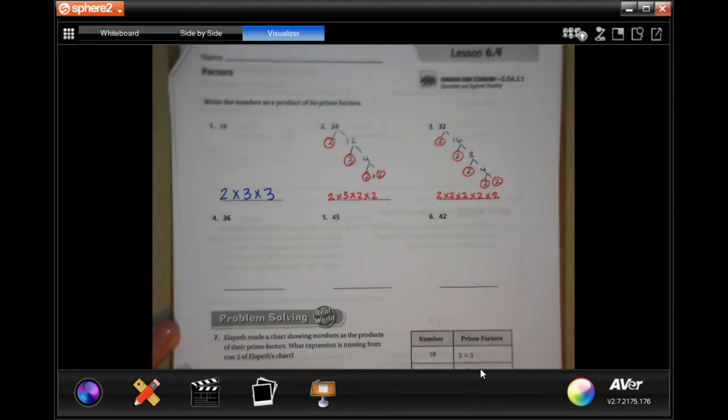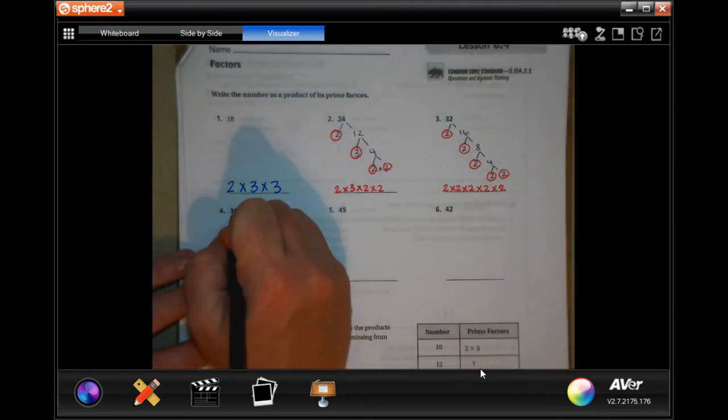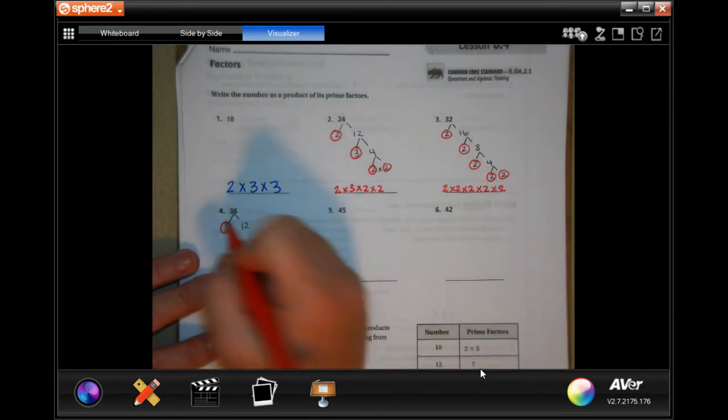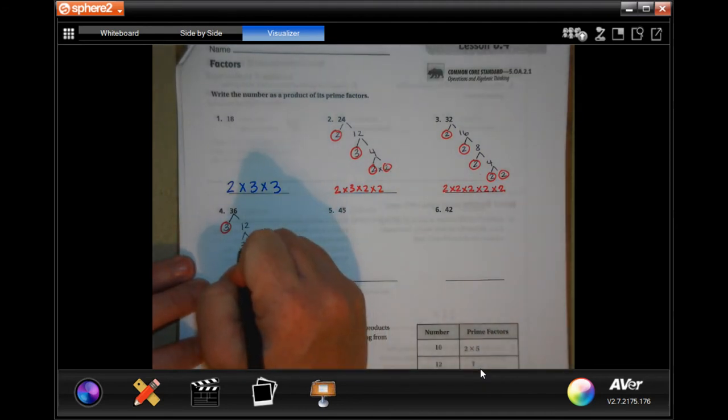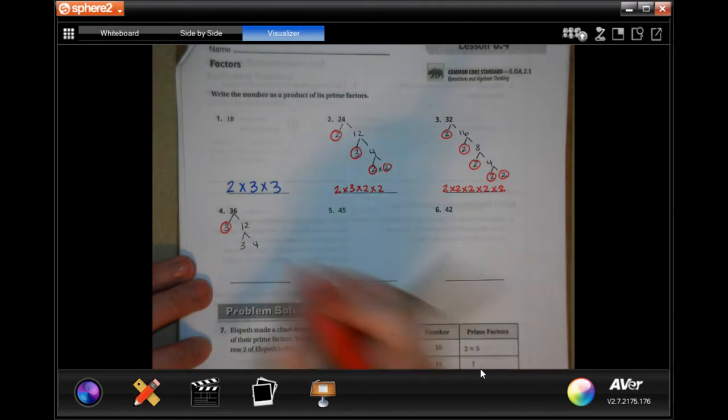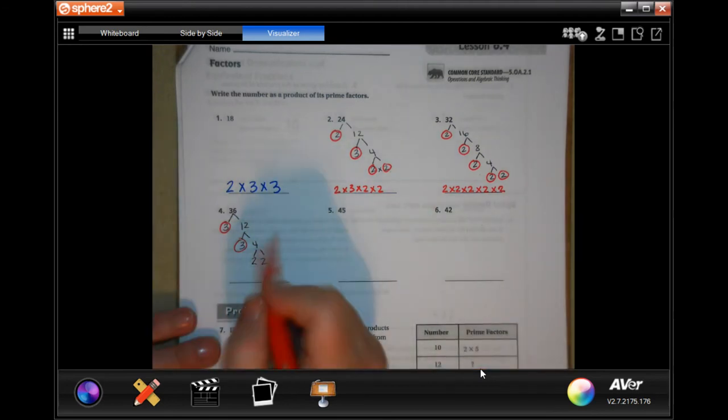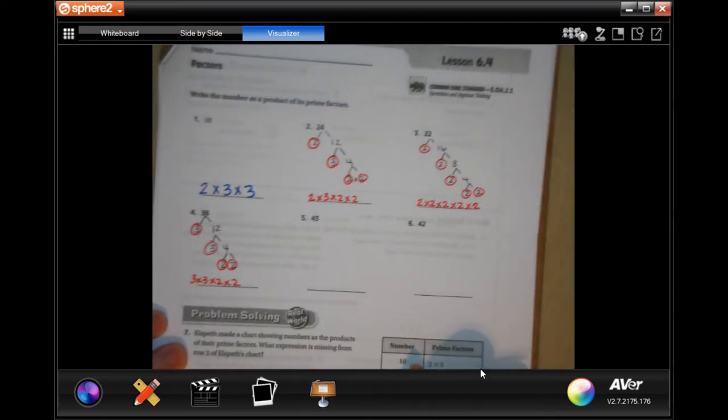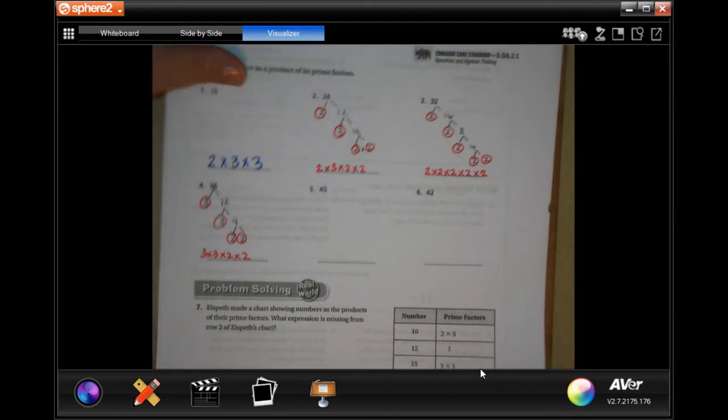So, 36. I'm going to do three times 12. Three is already prime. 12 is three and four. Again, three is prime. And four is two and two, both of which are prime. So, three times three times two times two. You guys do five and six. These really do get kind of fun once you get used to them.